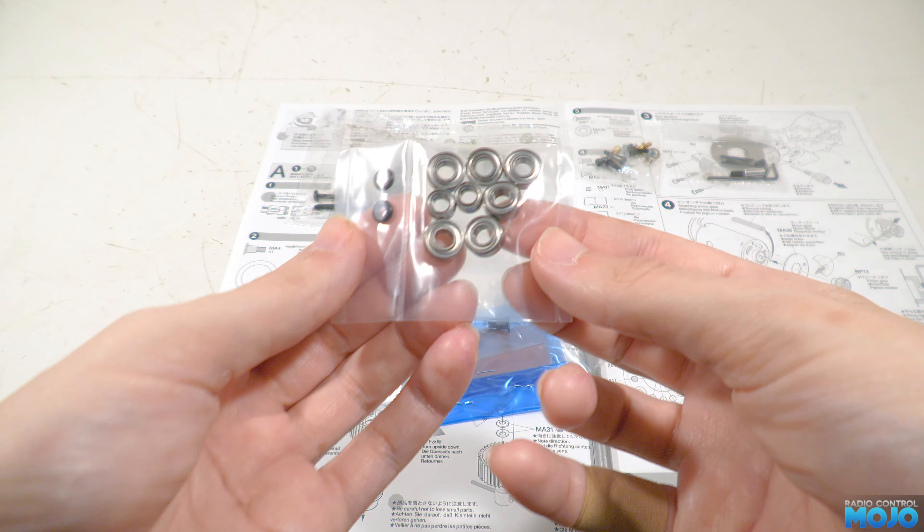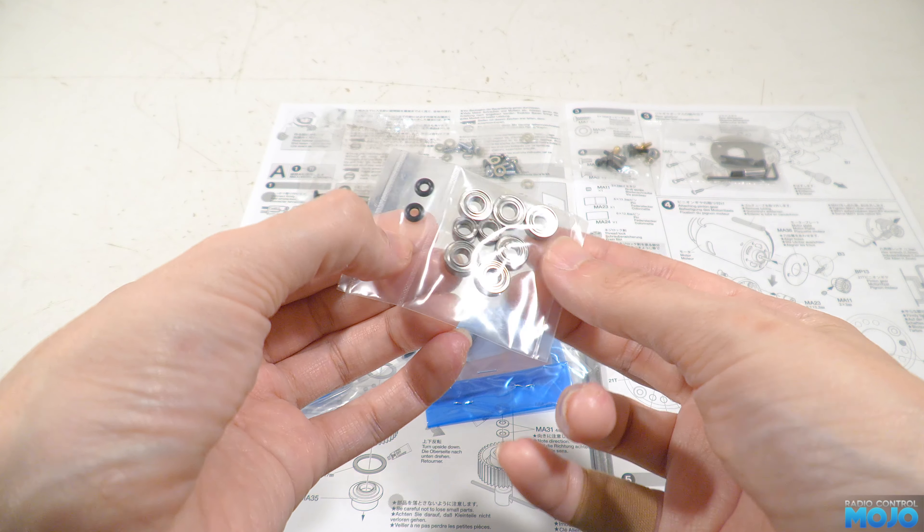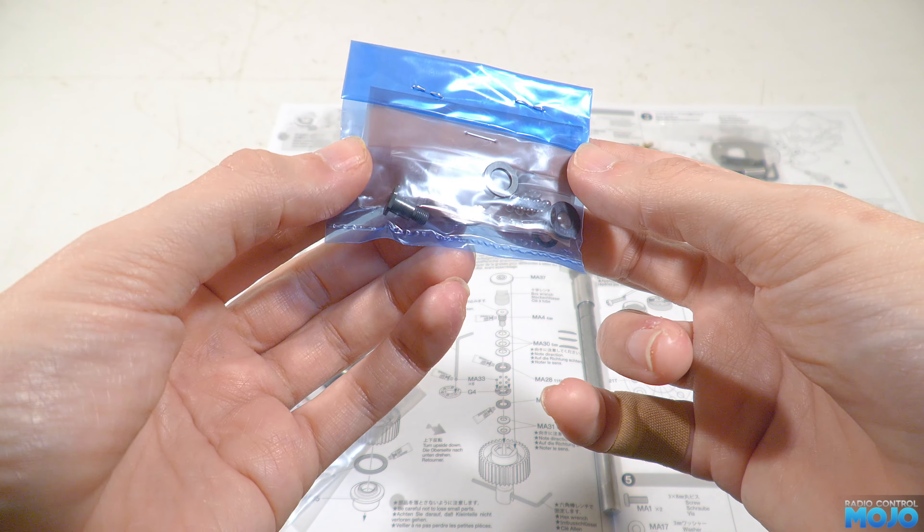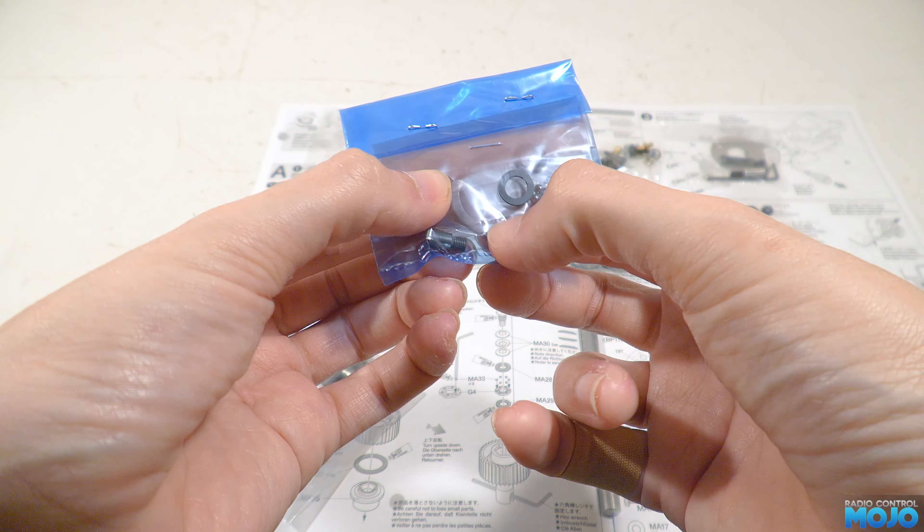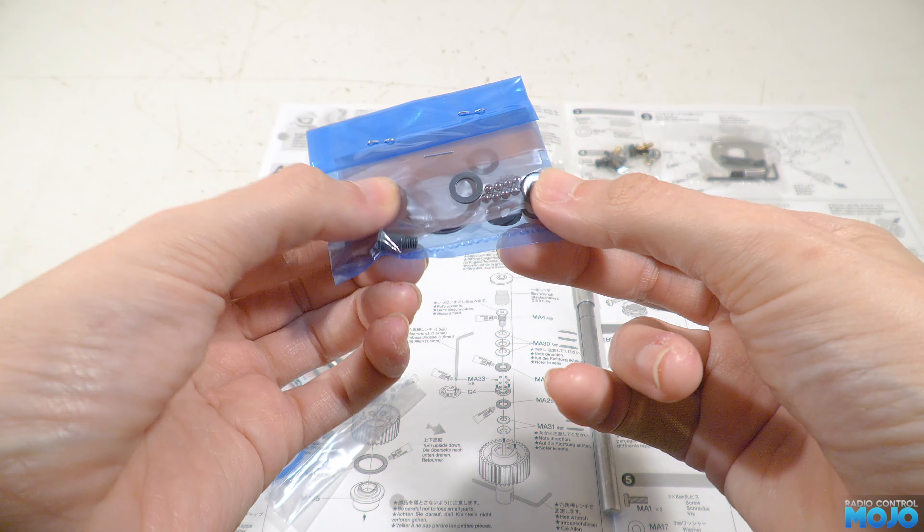A rare thing for a Tamiya kit, a full set of bearings. This bag also has all the parts for the ball diff, special washers, pressure plates and many, many tiny balls.